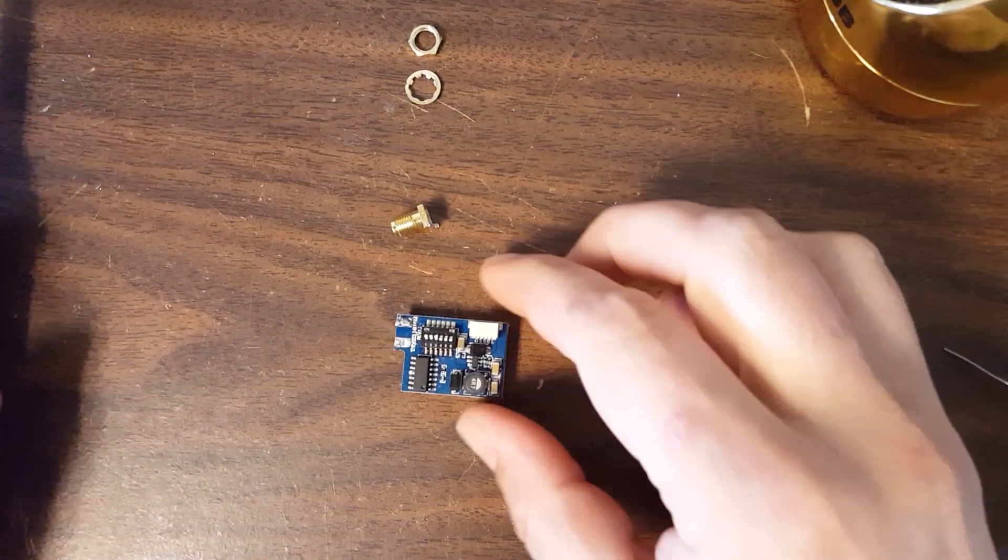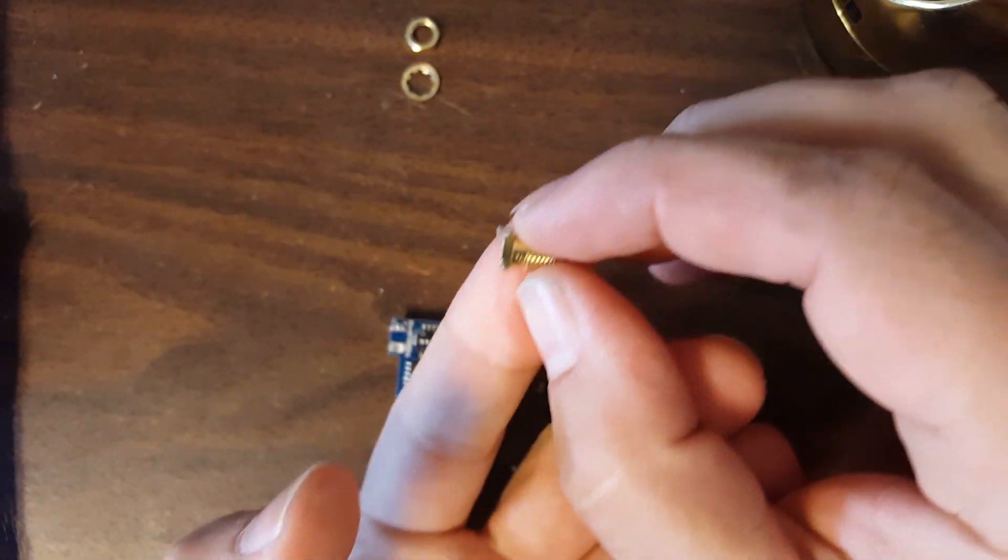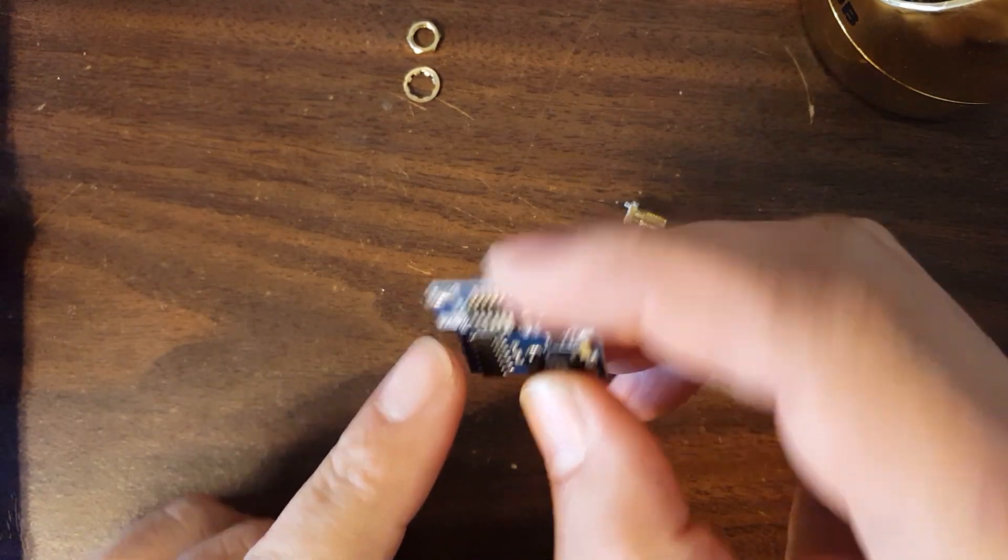Okay. Well, that didn't take long at all. Very easy. So you can see that I've got the SMA or RP-SMA connector cut off flush, and we still got little legs on here. We're going to desolder.